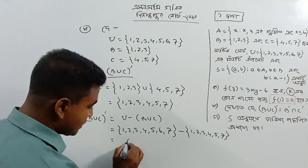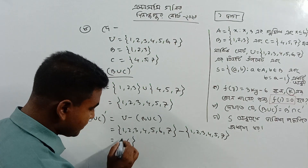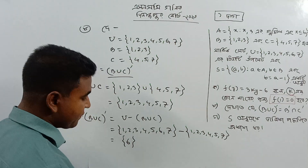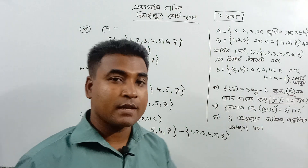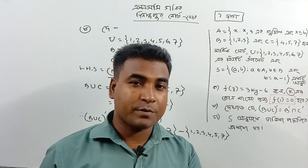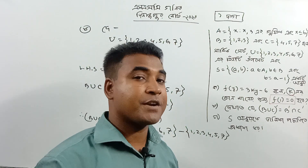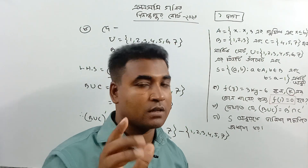The second element is left. So what is the left-hand side? Left-hand side is equal to 6. So right-hand side is equal to 6.